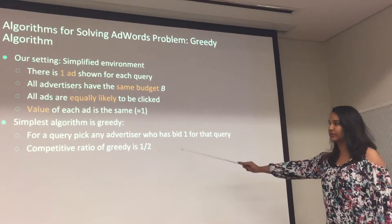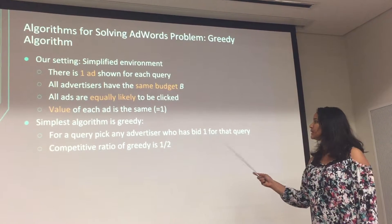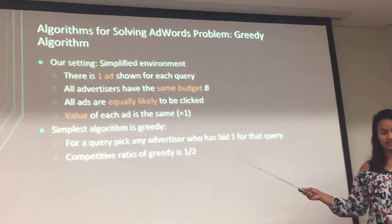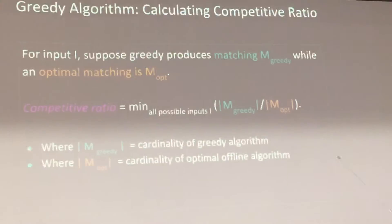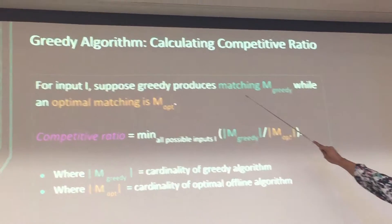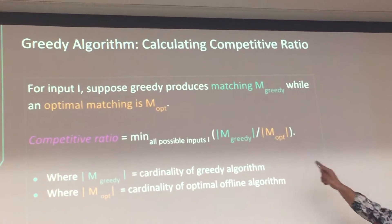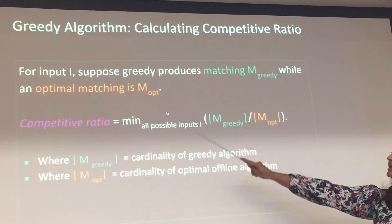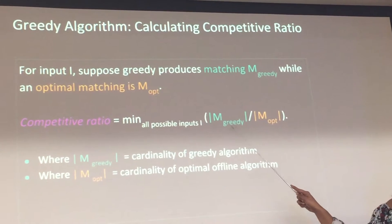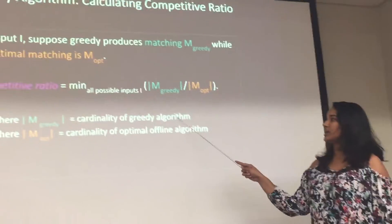The simplest algorithm for solving the adwords problem is the greedy algorithm: given a query, the advertiser has to bid for that query. The competitive ratio is one-half, as already mentioned. Calculating the competitive ratio involves comparing the greedy matching M-greedy and the optimal matching M-optimal — the ratio is the cardinality of greedy divided by the cardinality of optimal.